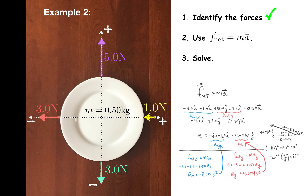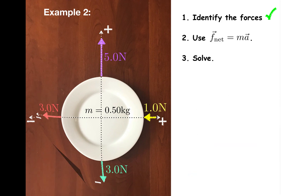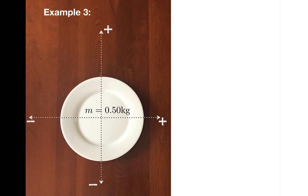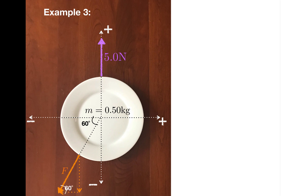Let me show you one more example with that approach, and this one is going to take the level of difficulty up a notch. Let's imagine that the plate is now being acted on by two forces: a force that's 5.0 N straight up, and another force with an unknown magnitude that's pointed at 60 degrees below the negative x axis. So the components of that force are going to look like this. Let's imagine further that under the influence of these two forces, the plate accelerates to the left along the negative x axis. What is the magnitude of the unknown force, and what's the magnitude of the acceleration of the plate?